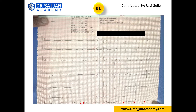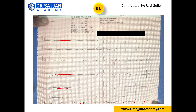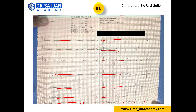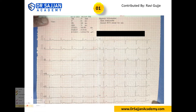The PR interval is normal. Now the ST segment: if you draw a line along the isoelectric baseline, you can see that everything stays within the isolated line — there is no change in height. This shows there are no changes in the ST segment.